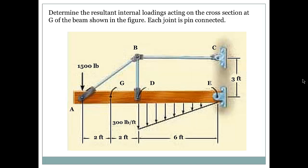The question says, determine the resultant internal loadings acting on the cross section at point G of the beam shown in the figure. Each joint is pin connected. So we have this beam with the loadings as it shows on the screen. We will try to find the internal loadings, that is the shear force and the bending moment and the normal force. So how do we do this?